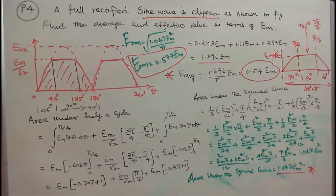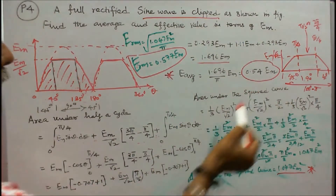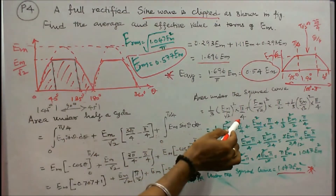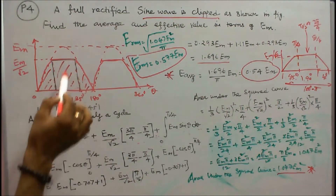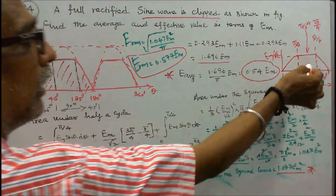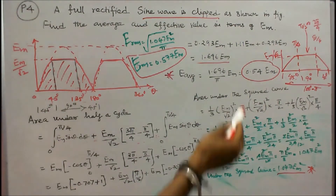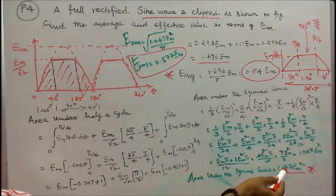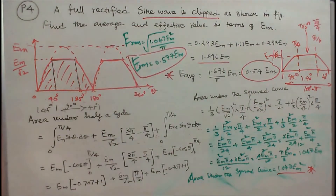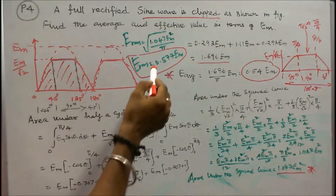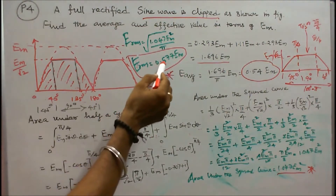Next, we find the RMS voltage. The area under the squared curve equals (1/3) times (EM/root 2) squared times pi/4, plus (EM/root 2) squared times pi/2, plus (1/3) times (EM/root 2) squared times pi/4. Simplifying, the area under the squared curve equals 1.047 EM squared. E RMS equals the square root of 1.047 EM squared divided by pi, giving E RMS equal to 0.577 EM.